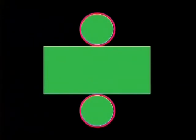What about the area of each of the circles? By now you should know this is π times r squared. There are two of them, so we have 2πr². The total surface area of this cylinder is 2πrh plus 2 all multiplied by πr².